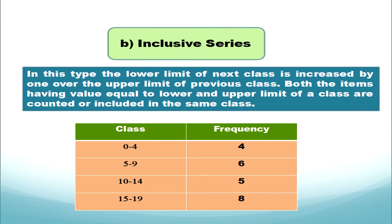In inclusive series, both items — lower limit and upper limit — are included in the class to make a tally chart. The class interval gap remains the same. For example: 0 to 4, then 4 plus 1 gives 5, so 5 to 9; then 9 plus 1 gives 10, so 10 to 14. We have constructed 0 to 4, 5 to 9, 10 to 14, 15 to 19 — the gap remains the same.